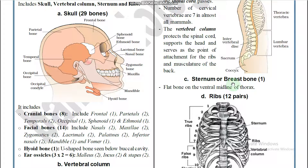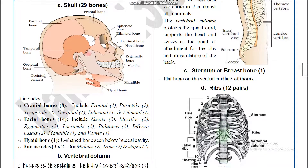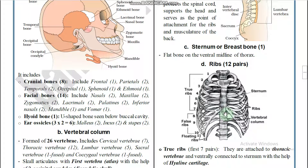Next, the sternum or breastbone. It is a single flat bone in the ventral midline of the thoracic region. This region is called the manubrium, which we will discuss further in the notes.